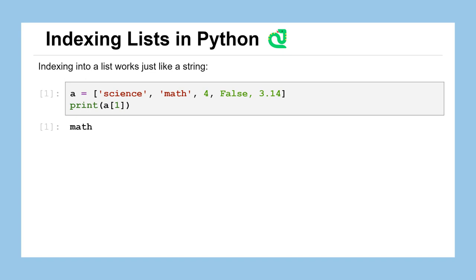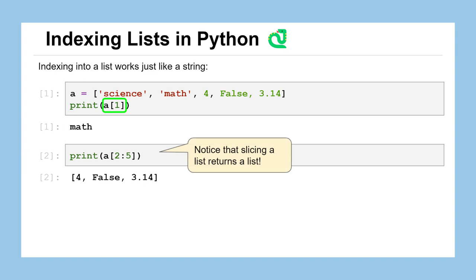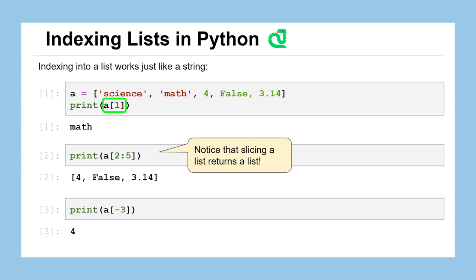Let's talk about indexing lists in Python — this should look very similar to when we work with a string. To index into a list, you use the name of that list, open a square bracket, and put the integer that represents the index you want. Just like with strings, index zero is the first element — that would be 'science'. So when I ask to print A[1], I get back 'math' because math is at index one, even though it's in the second position. We can use slices just like with strings: A[2:5] gives items starting at index two up to but not including index five, giving us indices two, three, and four — that's why we get 4, False, and 3.14. When you do a slice on a list, you get a list back. And just like with strings, we can use negative indices: 3.14 is at index negative one, False at negative two, and the integer 4 at index negative three.